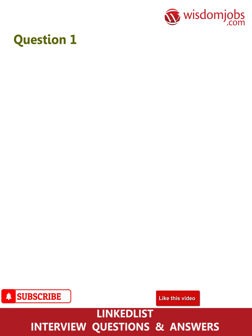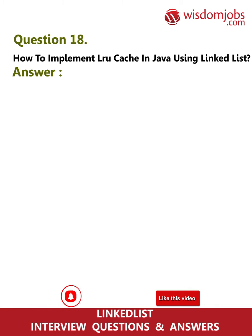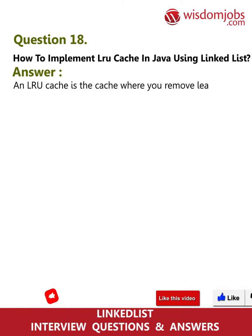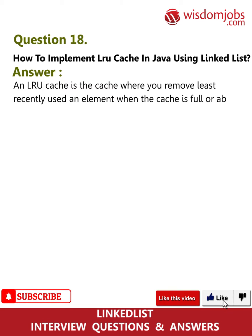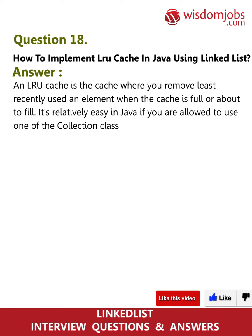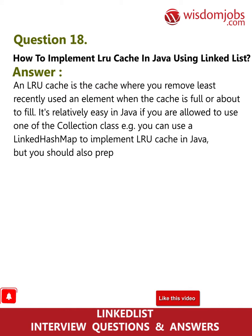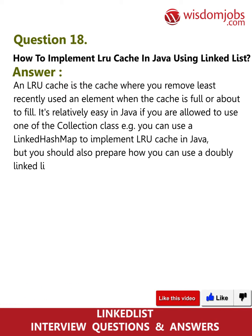Question 18: How to implement an LRU cache in Java using a linked list? An LRU cache is a cache where you remove the least recently used element when the cache is full or about to fill. It is relatively easy in Java if you are allowed to use a collection class — for example, you can use a LinkedHashMap to implement an LRU cache. You should also prepare how to use a doubly linked list to create an LRU cache.